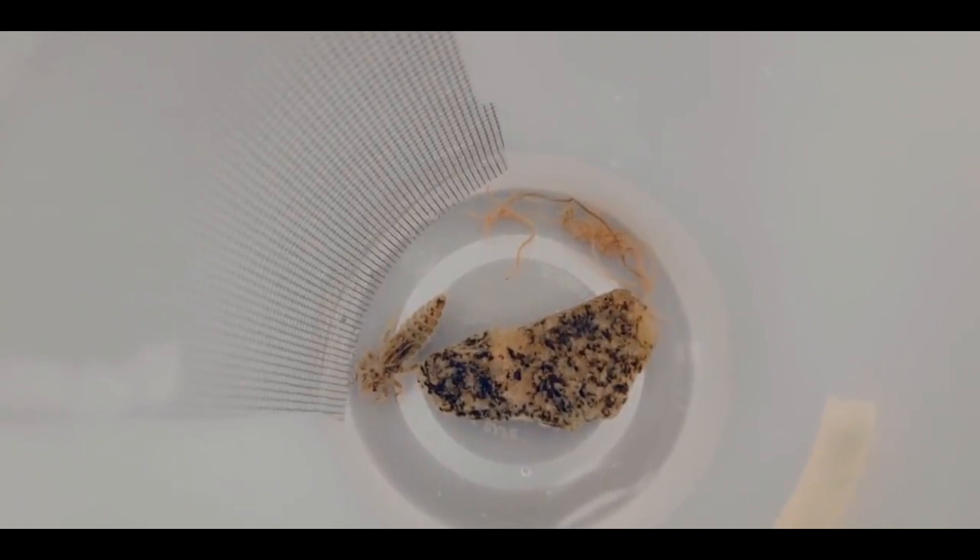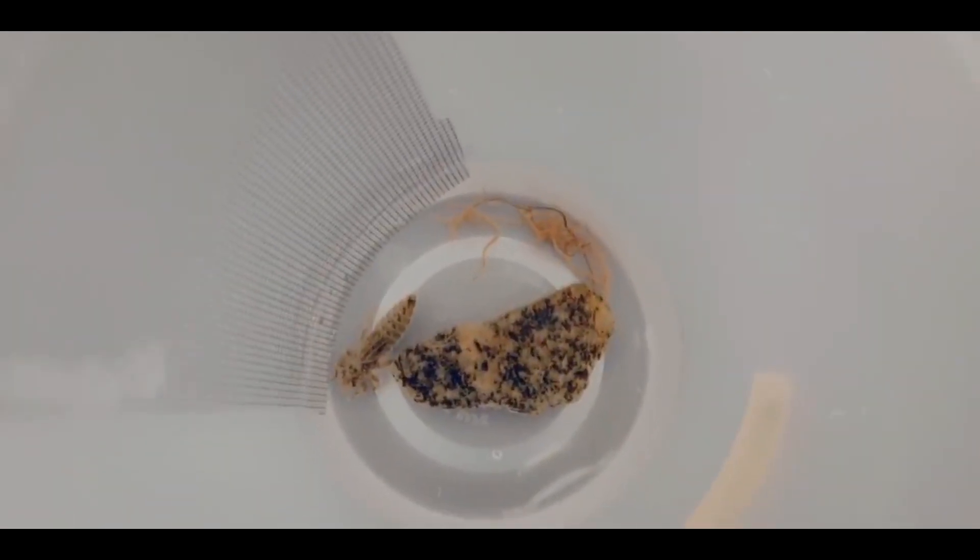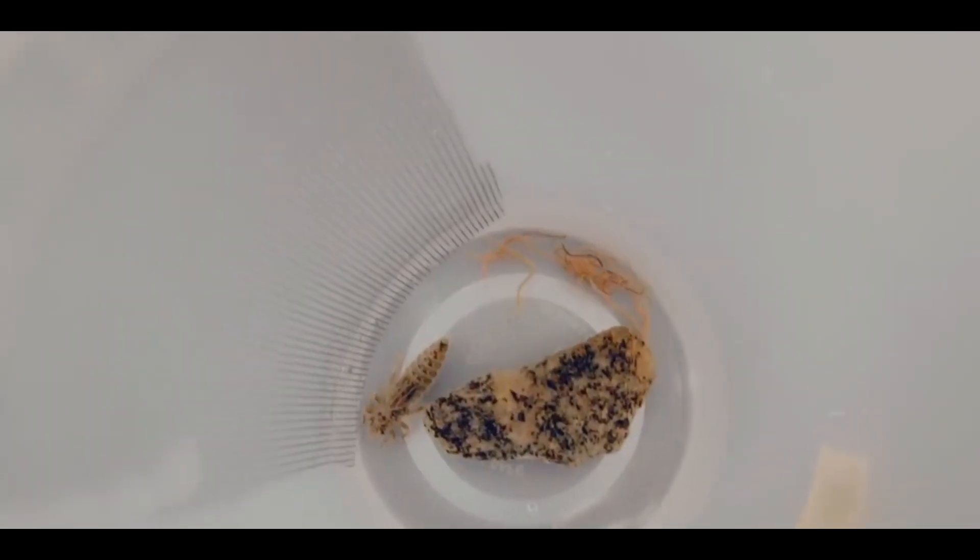So now my nymph has worms. It has a rock. It has mesh to crawl up on when it wants to metamorphose. So it has everything that it needs. It can munch on those worms whenever it gets hungry.